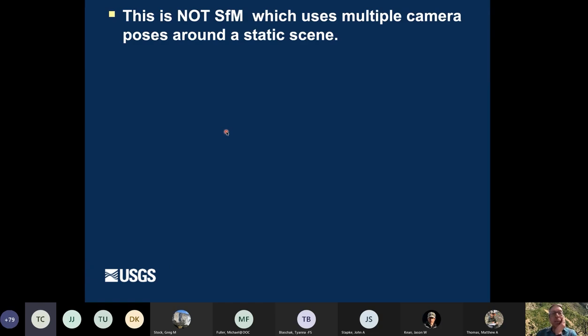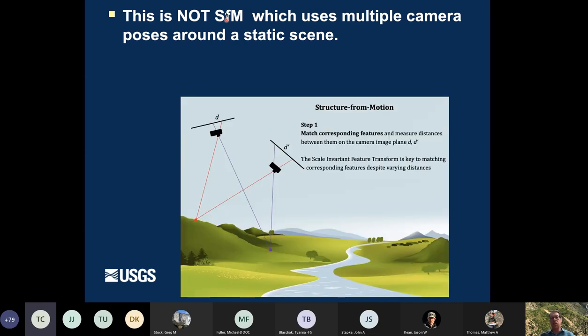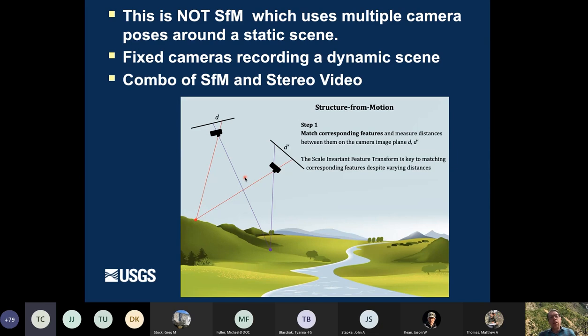And if Thomas were here, he would want me to tell you that this approach is not traditional structure from motion, which uses multiple camera poses around a static scene. So here's a cartoon that I borrowed from a UNAVCO tutorial just to kind of remind you, you know, this is traditional structure from motion. But rather what this approach used was two fixed cameras recording a dynamic scene. And so this approach was a combination of structure from motion and stereo video.